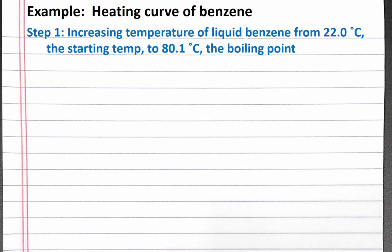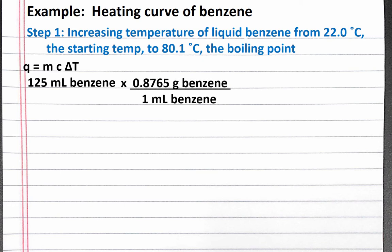When we increase the temperature of a substance, we use the equation heat equals mass times specific heat capacity times change in temperature to calculate the energy needed to change the temperature of a substance. We can calculate the mass of benzene from its volume using dimensional analysis and the given density. The density allows us to convert from milliliters of benzene to grams of benzene.